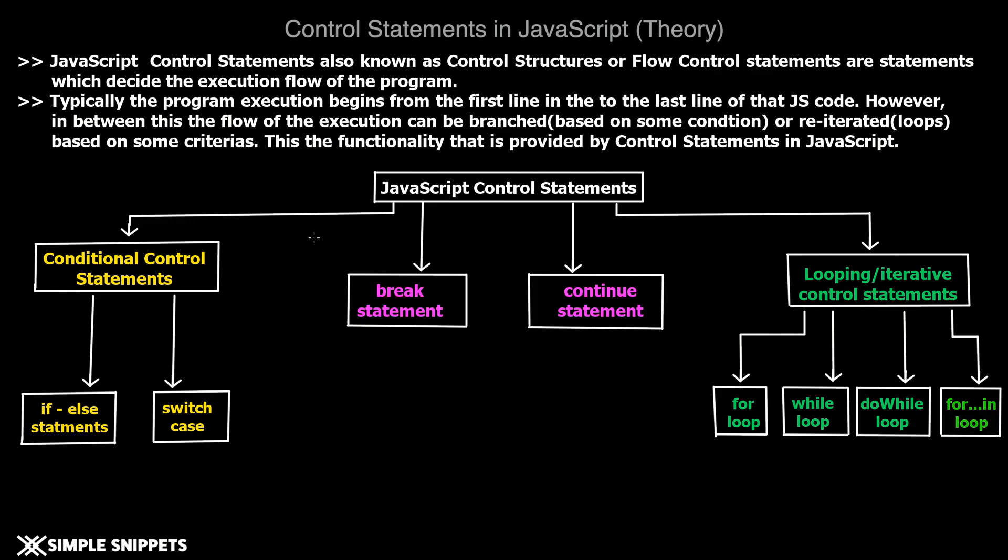Now in JavaScript we basically have two different types of control statements depending upon what activity or what type of flow control we are going to be performing. Number one is conditional control statements and number two is looping or iterative control statements. We have a third type which assists in these control statements: the break statement and the continue statement.